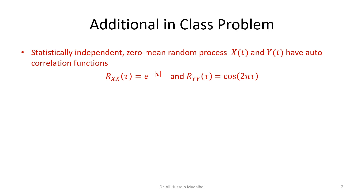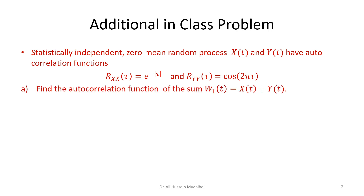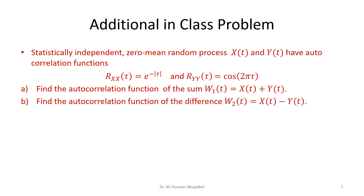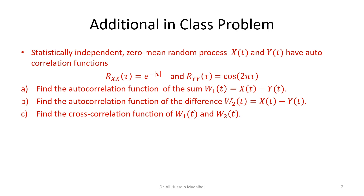Here is an additional in-class problem — you can pause the video and try it. It has three parts and is related to random processes generally. We have two statistically independent, zero-mean Gaussian random processes X and Y. Given the autocorrelations for X and Y, find: the autocorrelation of the sum W1, the autocorrelation of the difference W2, and the cross-correlation between W1 and W2. Please try it yourself and share your answers in the comment section. Thank you, and we'll see you in the coming video.